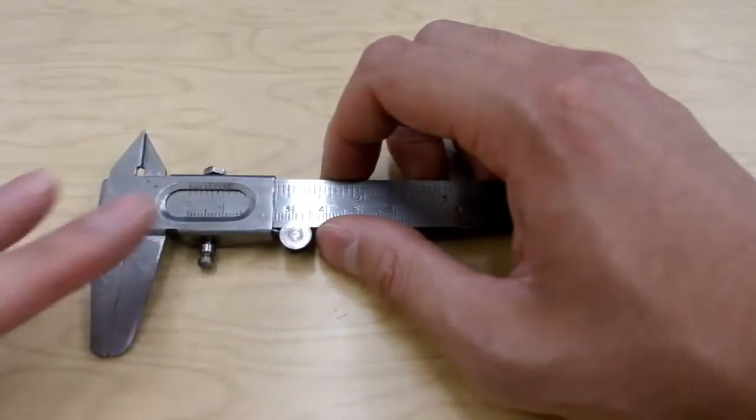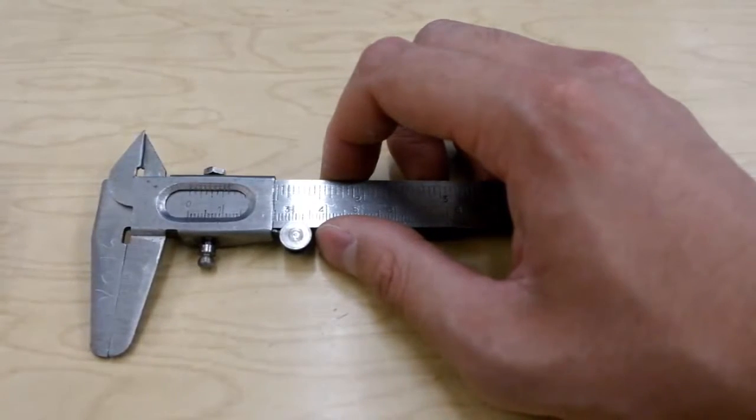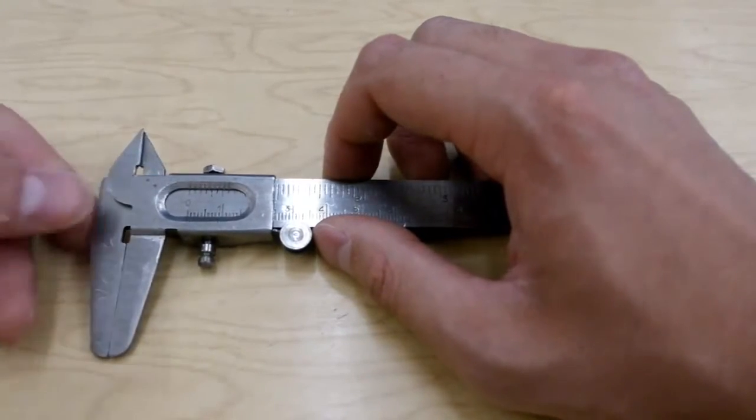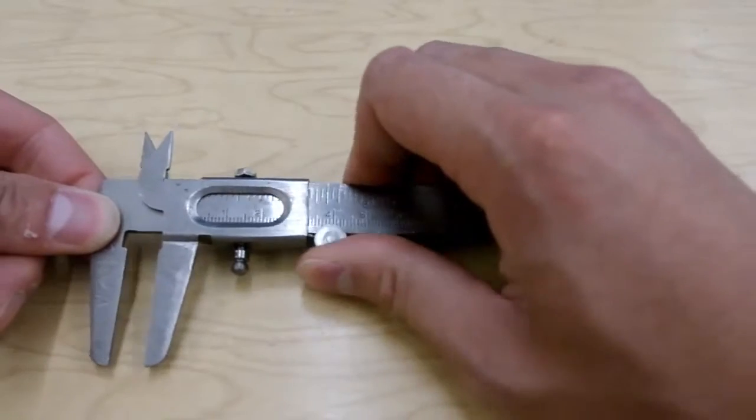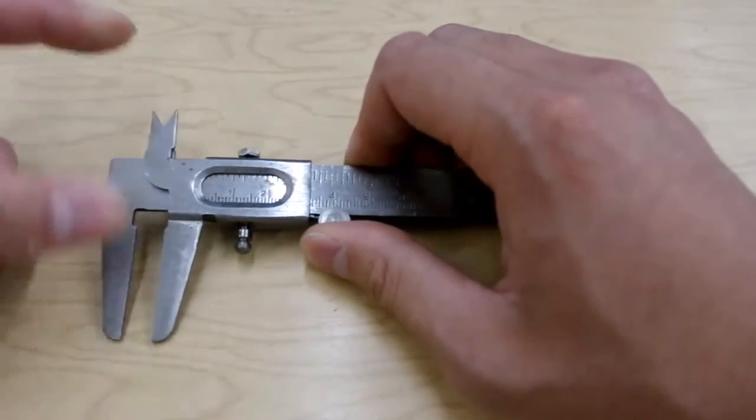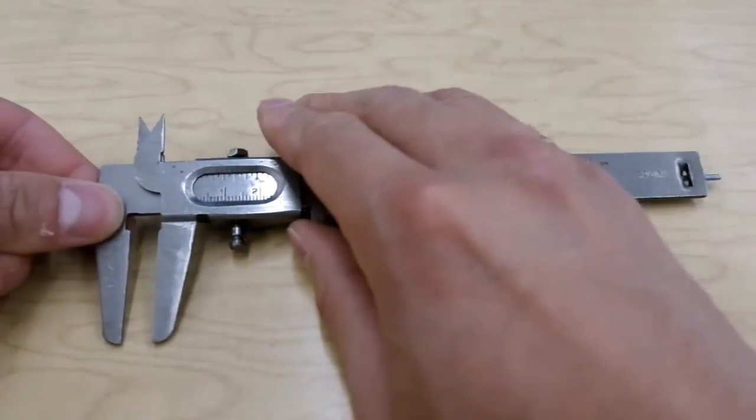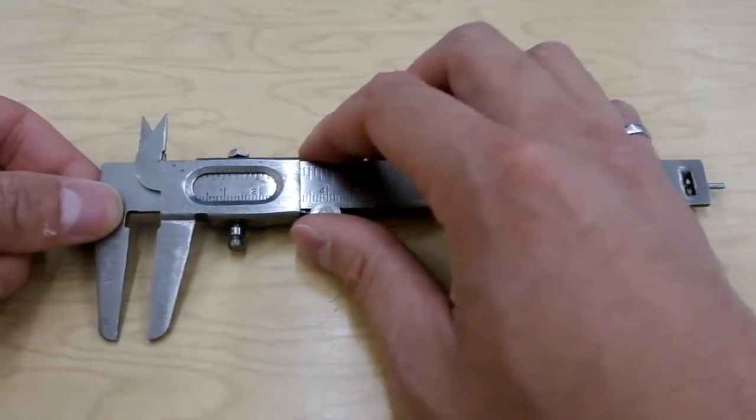It's mostly what's happening up front here that allows us to get down to that extra digit. Now, as we move this back and forth, you'll notice there's a few things that move around, and it allows us to measure different things.